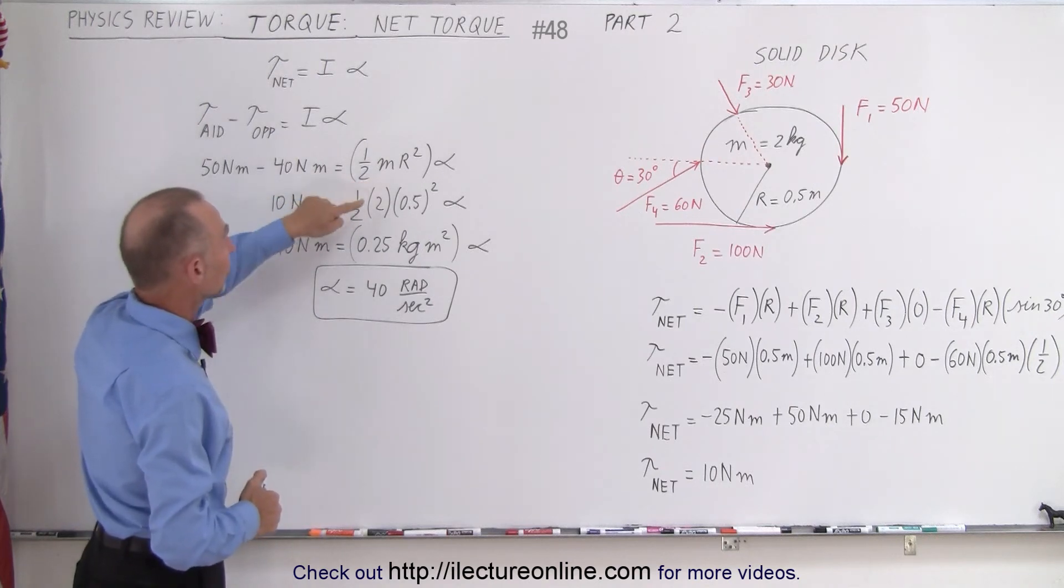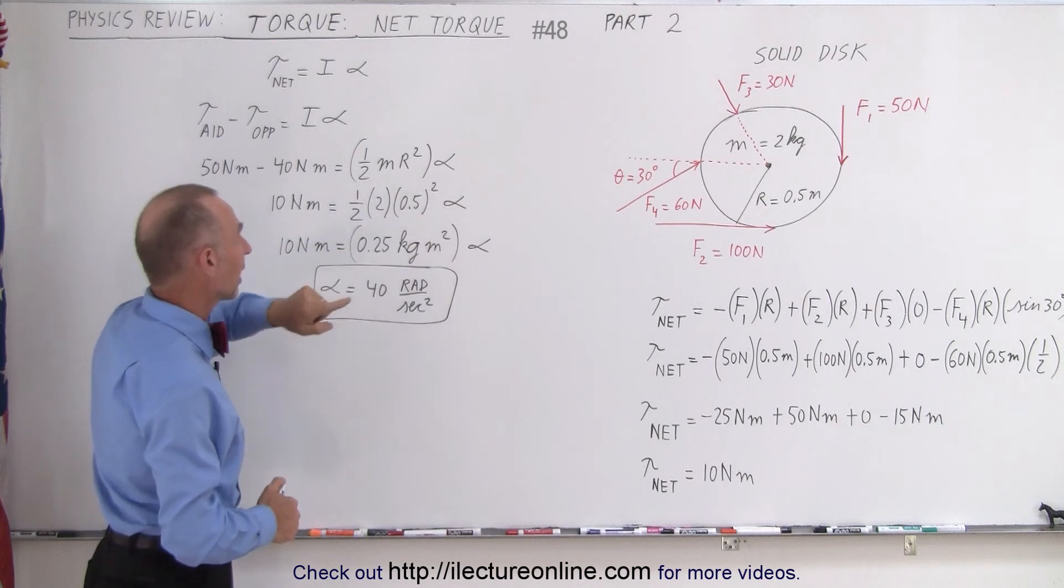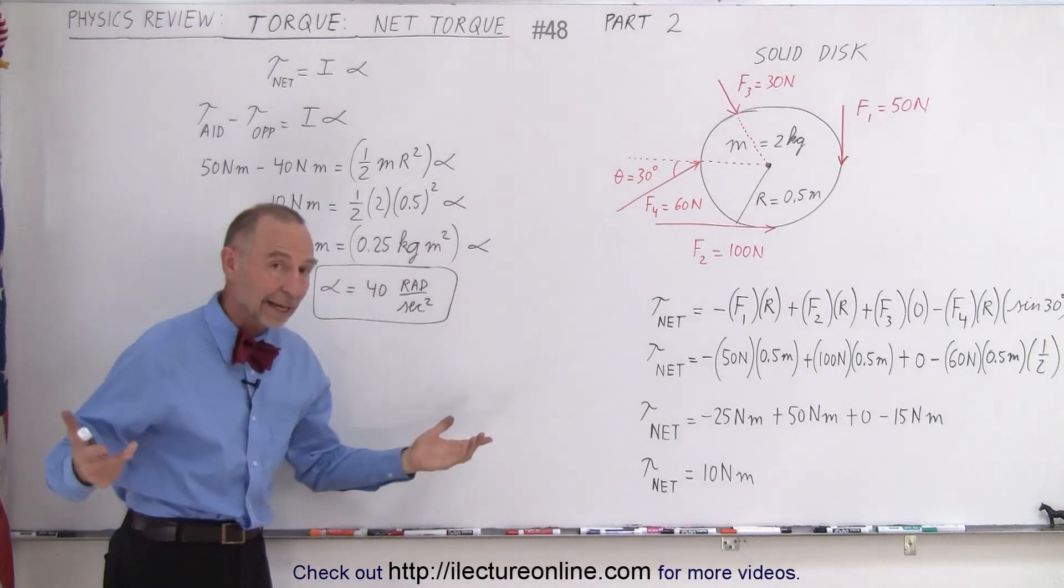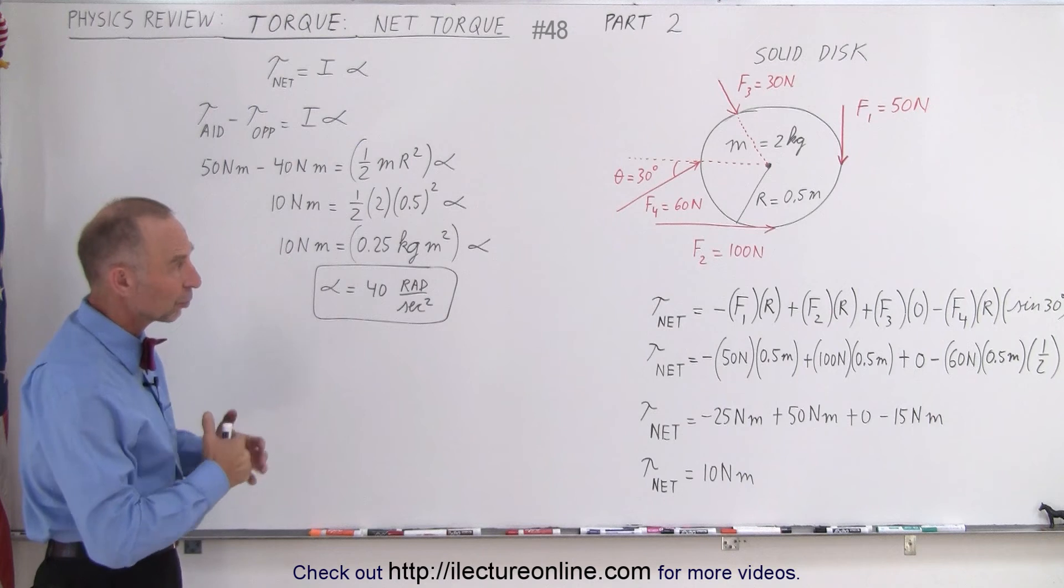So that will equal the moment of inertia, half times the mass times the radius squared, times the angular acceleration. Calculate the angular acceleration: it is 40 radians per second squared.